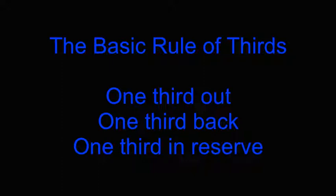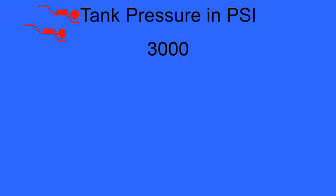In open circuit technical diving, gas management begins with the basic rule of thirds. As the name implies, one-third of the bottom gas is allocated to go out, one-third of the bottom gas is allocated to come back, and one-third of the bottom gas is to be held in reserve. The following animation illustrates this concept.